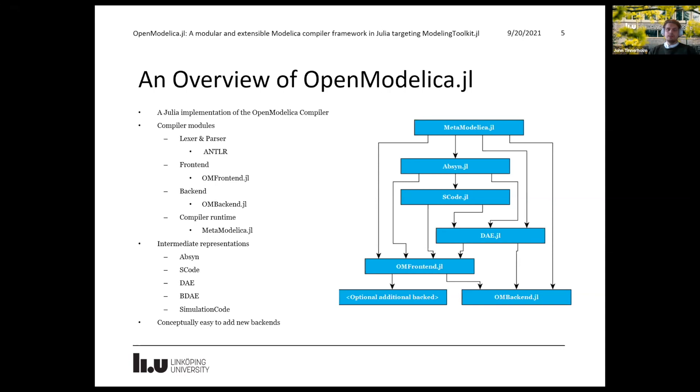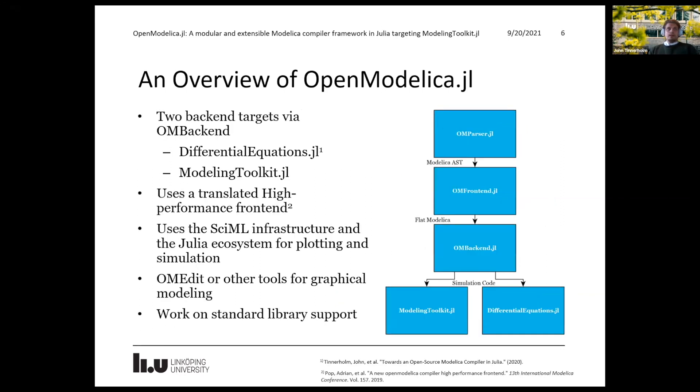And the goal of this, of course, is to use this composability of Julia and conceptually it should be very easy to add new backends to our frontend. So we currently have two backend targets. We have one targeting DifferentialEquations.jl and we have one targeting ModelingToolkit.jl and we now use the high performance frontend as a basis of our Modelica frontend.